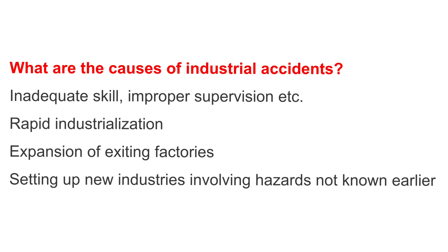Question: What are the causes of industrial accidents? Answer: 1. Inadequate skill, improper supervision, etc. 2. Rapid industrialization. 3. Expansion of existing factories. 4. Setting up new industries involving hazards not known earlier.